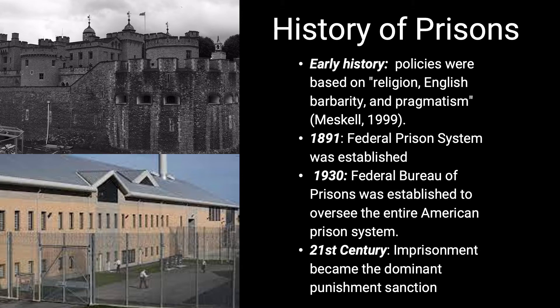In 1891, the federal prison system was established, allowing three prisons in the United States to be funded and begin construction. By 1930, the Federal Bureau of Prisons was established to oversee the entire prison system and were used to isolate criminals and maintain safety in a community. Throughout the 20th century, imprisonment was the dominant punishment sanction used against offenders.